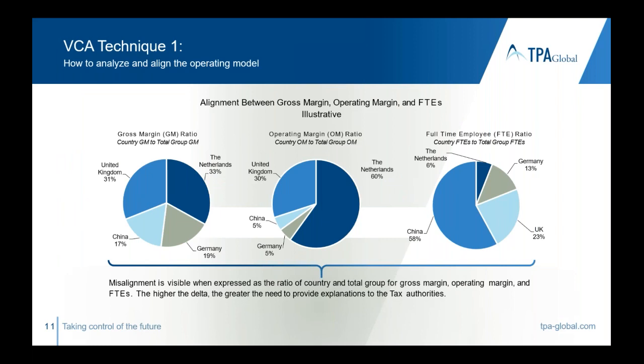I put in two quite simple examples of a value chain analysis. The first is the pie chart model, which is a very simple model also used in CBCR. It is very easy to use in communications to people who are less experienced in transfer pricing because it very quickly tells you where things may not be correct or may be misaligned.